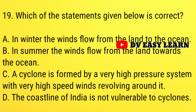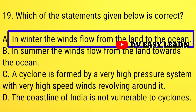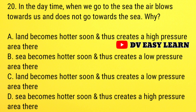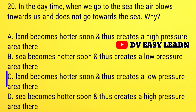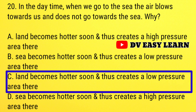Question number 19: which of the statements given below is correct? Question number 20: in the daytime when we go to the sea, the air blows towards us and does not go towards the sea. Correct answer: land becomes hotter soon and thus creates a low pressure area there.